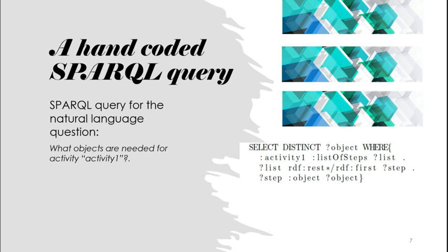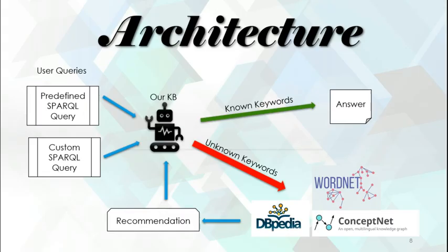For instance, here we have a SPARQL template for the natural language query 'what objects are needed for activity X.' Looking at the architecture of our system, the user can address either a predefined or a custom SPARQL query to the framework. The framework first checks whether there are any unknown keywords. If there are none, the answers are returned immediately; otherwise, it uses the semantic matching mechanism that searches WordNet, DBpedia, and ConceptNet to return recommendations that may exist in our knowledge base.